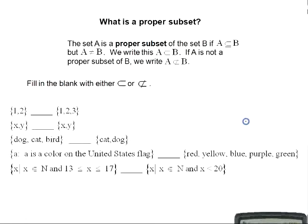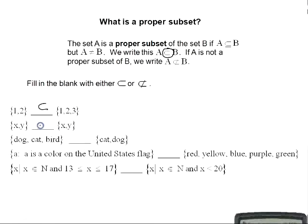Now let's talk about proper subsets. For A to be a proper subset of B, A must be a subset of B but A is not allowed to equal B. Every element of A must be an element of B, but the sets cannot be equal. The set {1, 2} is a proper subset of {1, 2, 3}. The set {X, Y} is not a proper subset of {X, Y} because these sets are equal, and equal sets cannot form a proper subset relationship.